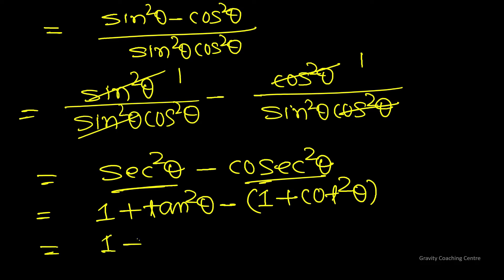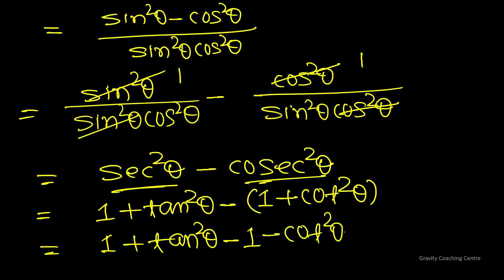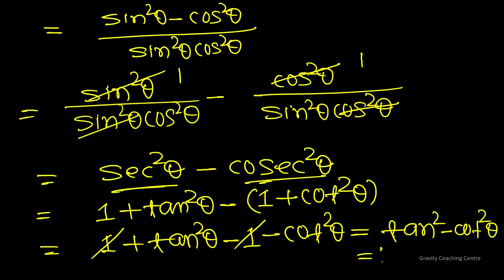So this equals (1 + tan²θ) - (1 + cot²θ). Opening the brackets, the 1's cancel, giving tan²θ - cot²θ, which equals RHS. Hence proved.